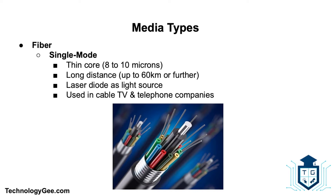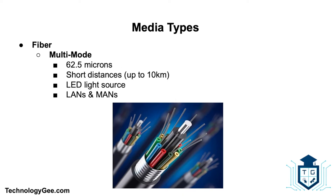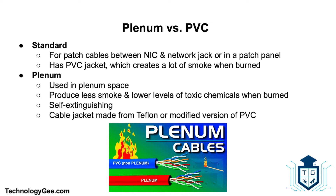Single-mode fiber has a thin core between 8 to 10 microns and is designed to carry a single light ray long distances — up to 60 kilometers or further. It uses a laser diode as a light source, and typical uses include cable TV and telephone companies. Multi-mode fiber has a thicker core of 62.5 microns, carries multiple light rays for short distances up to 10 kilometers, uses an LED light source, and is typically used for local and metropolitan area networks.